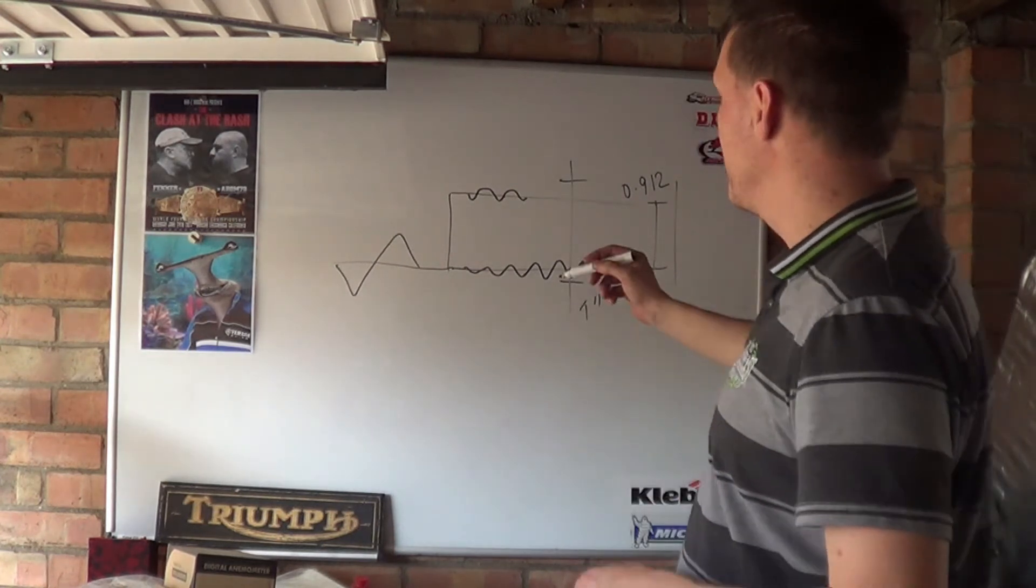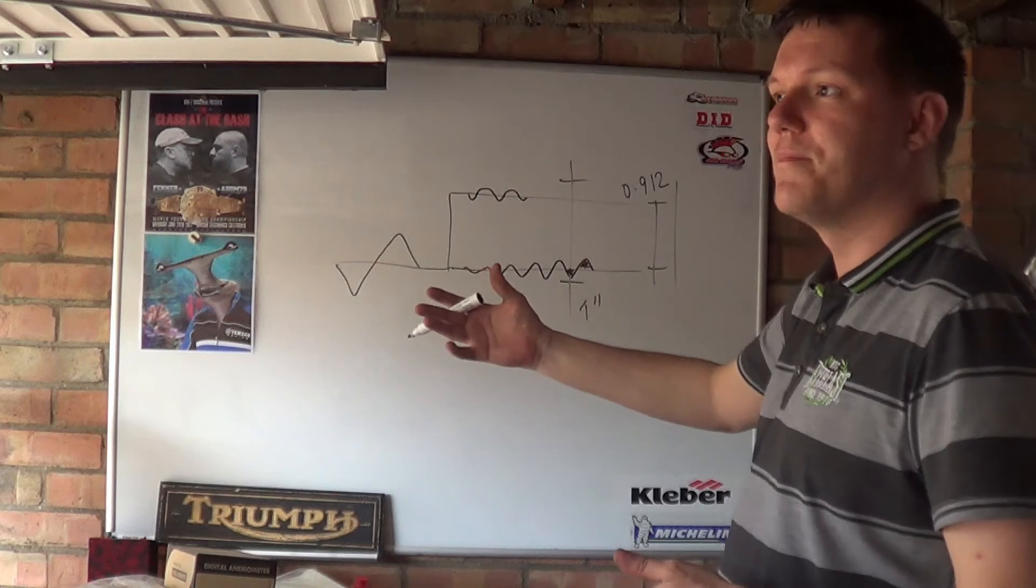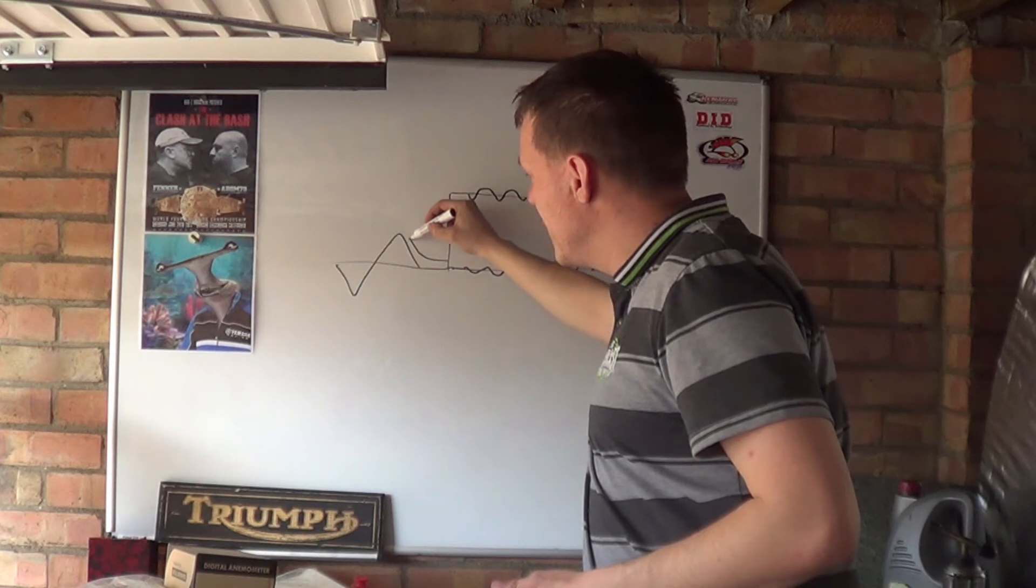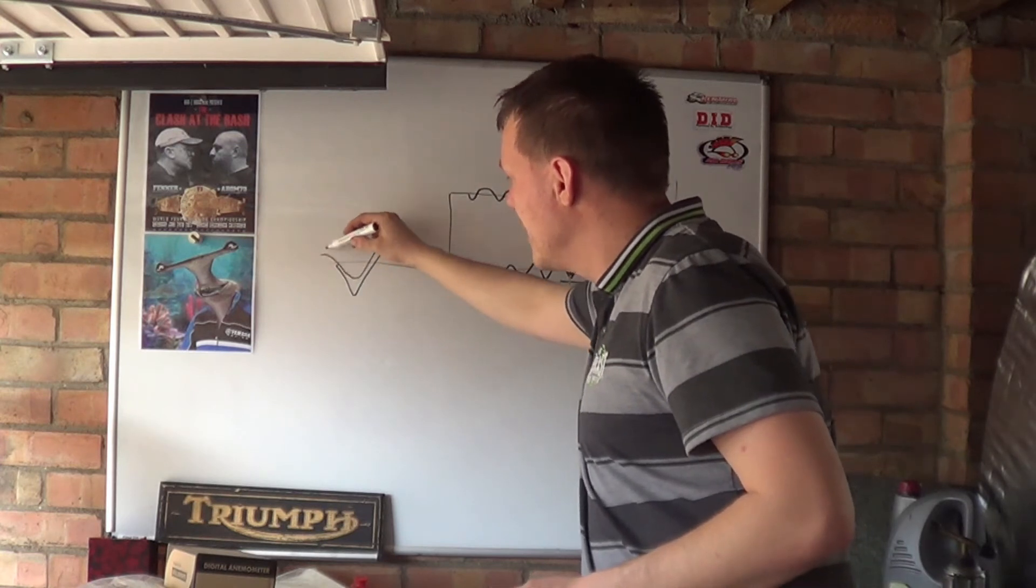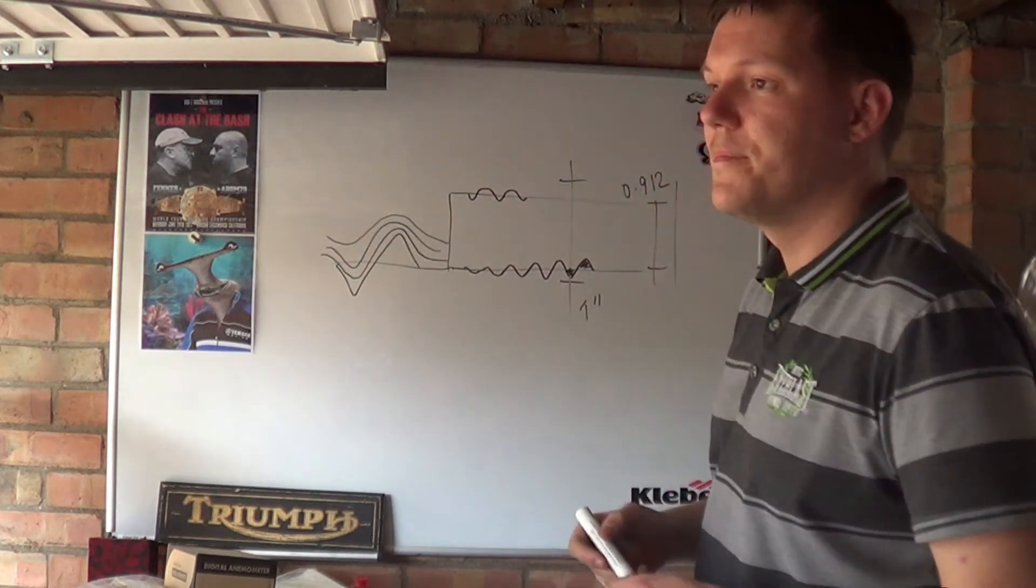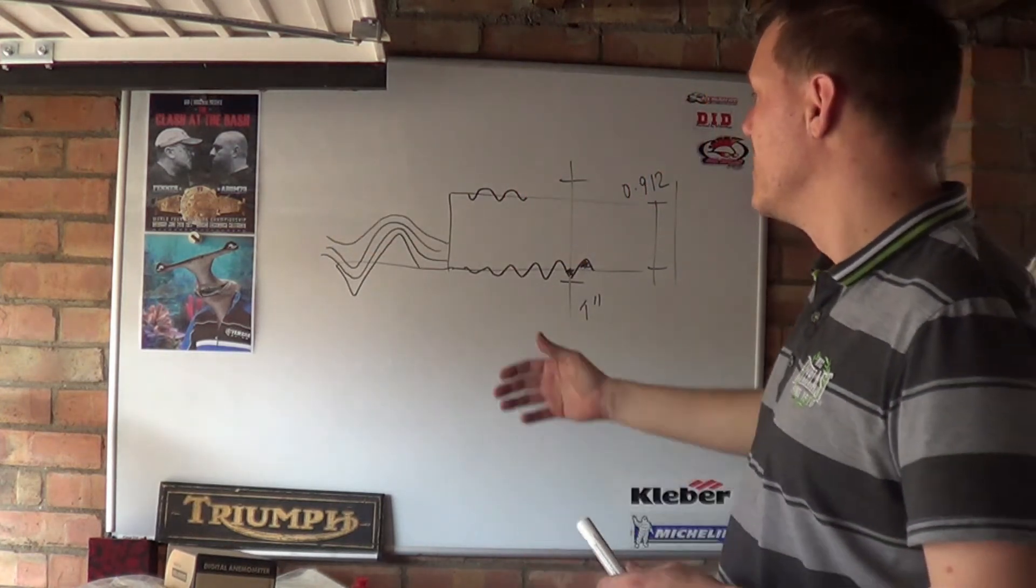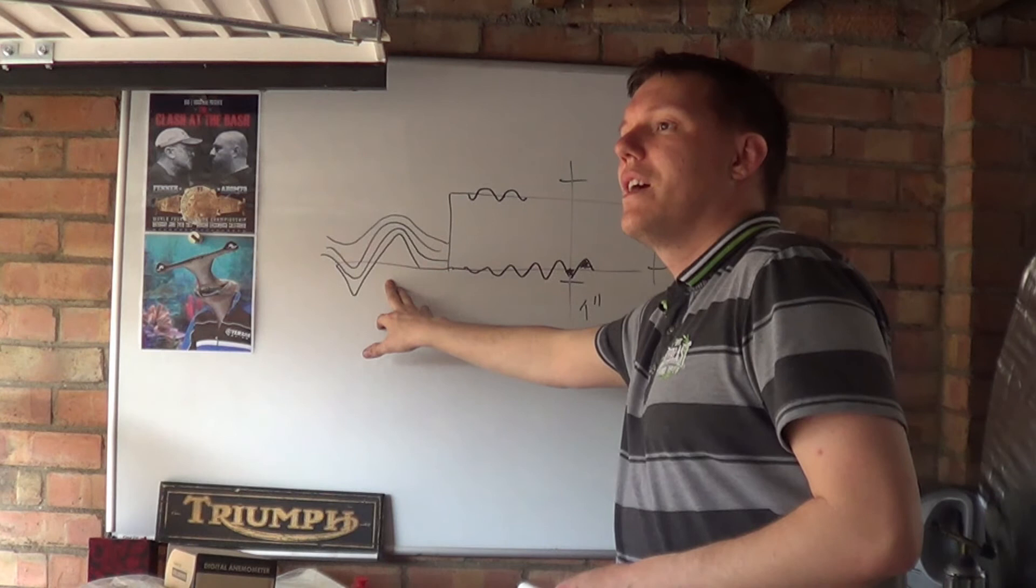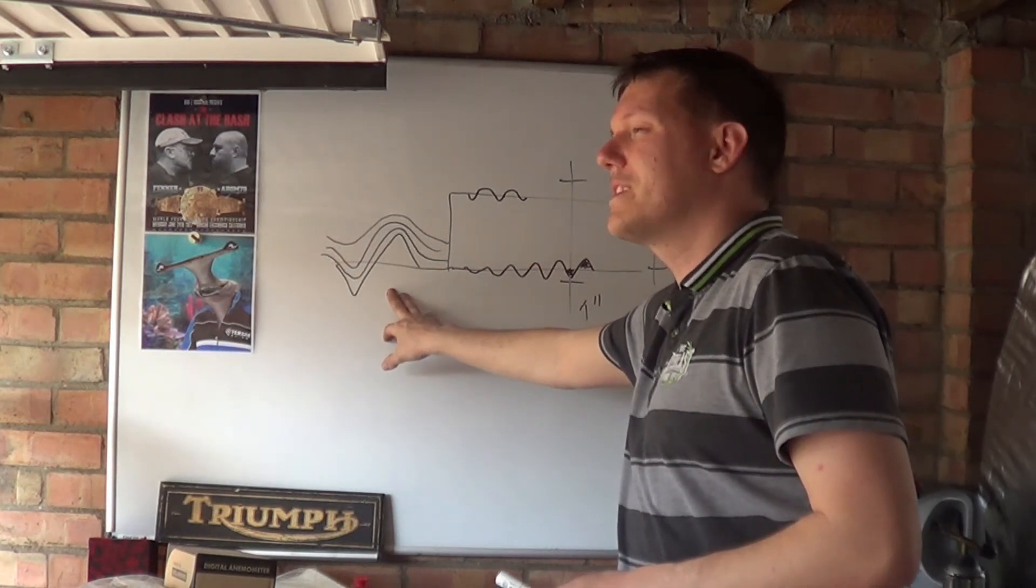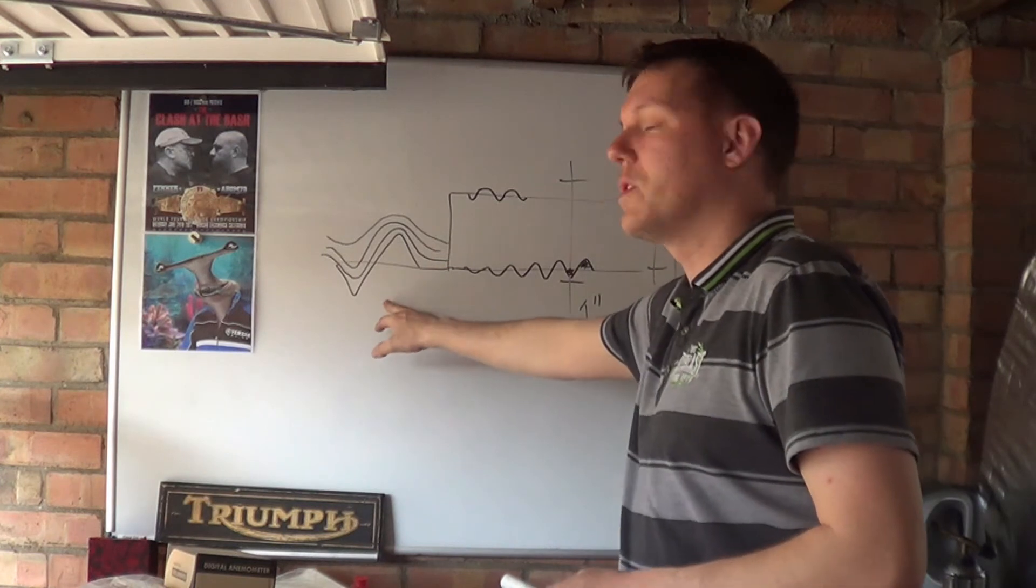The cool thing about this is when we look back at our grain structure, because it's all squashed your grain structure goes like this, it follows the profile of the thread. So generally it's called working threads, it's not forging it's called working.